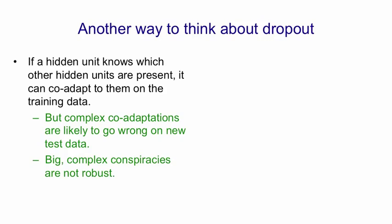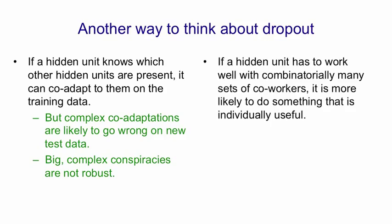It's much better if you want conspiracies to have lots of little conspiracies. Then when unexpected things happen, many of the little conspiracies will fail, but some of them will still succeed. So by using dropout, we force a hidden unit to work with combinatorially many other sets of hidden units.